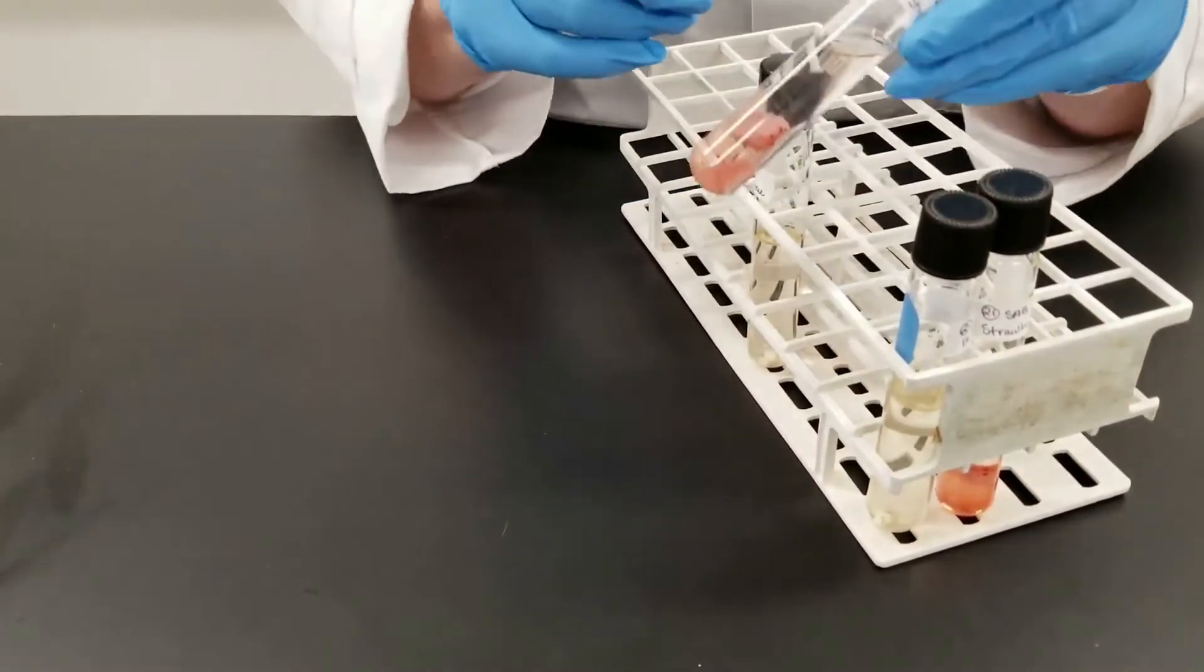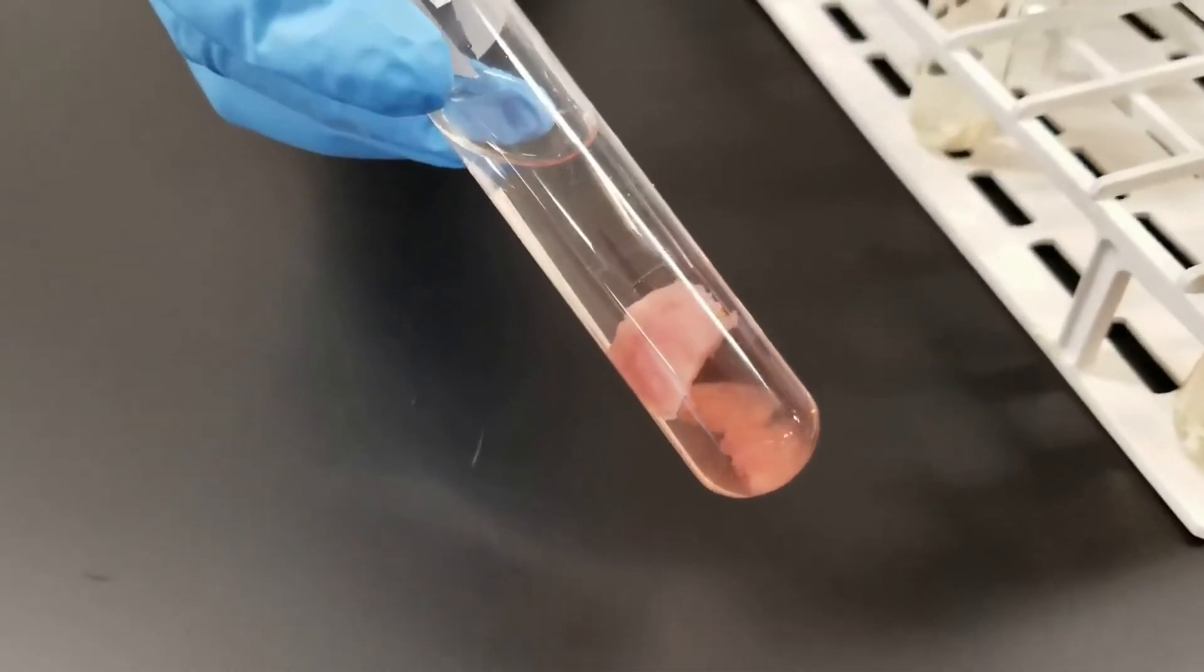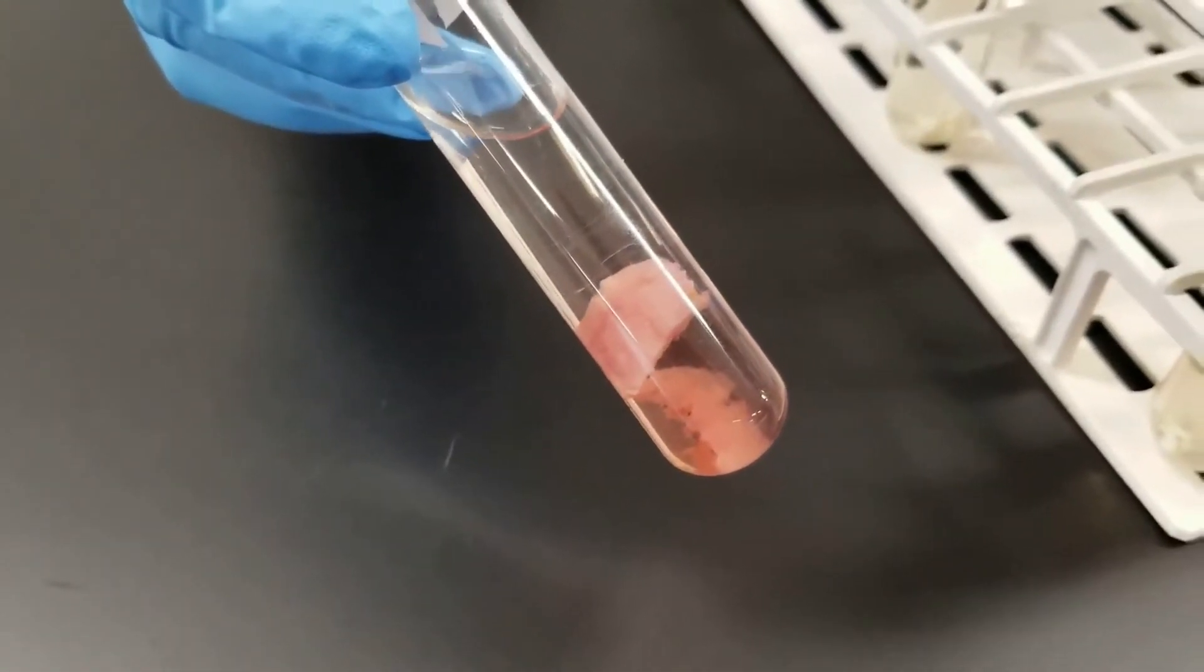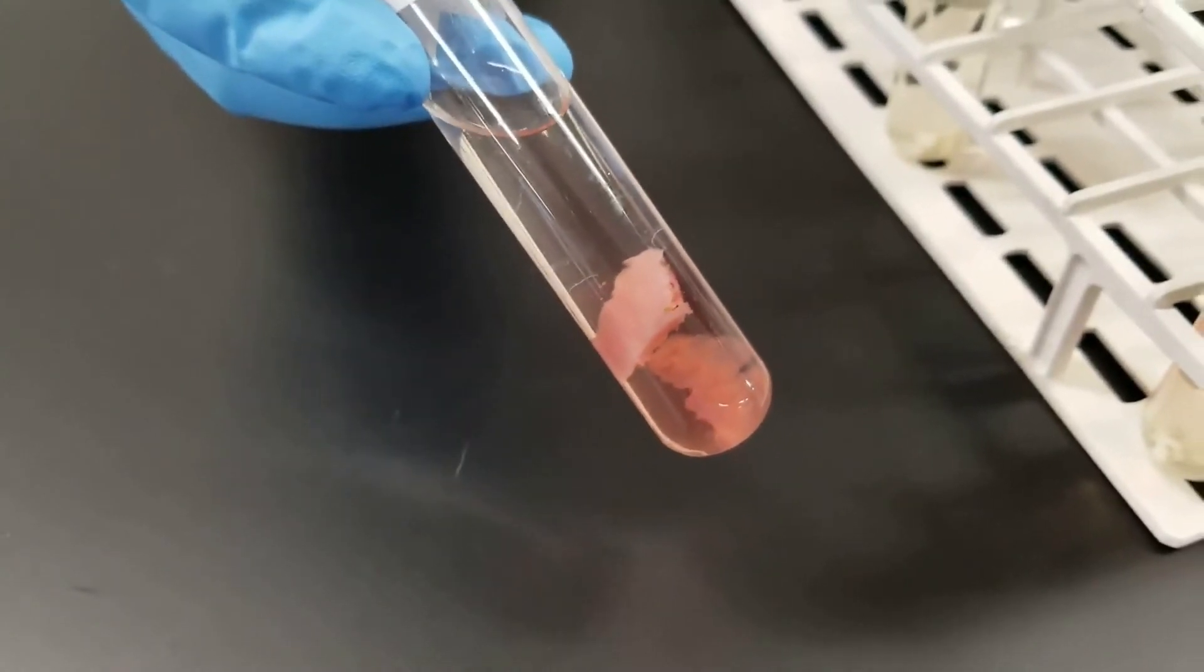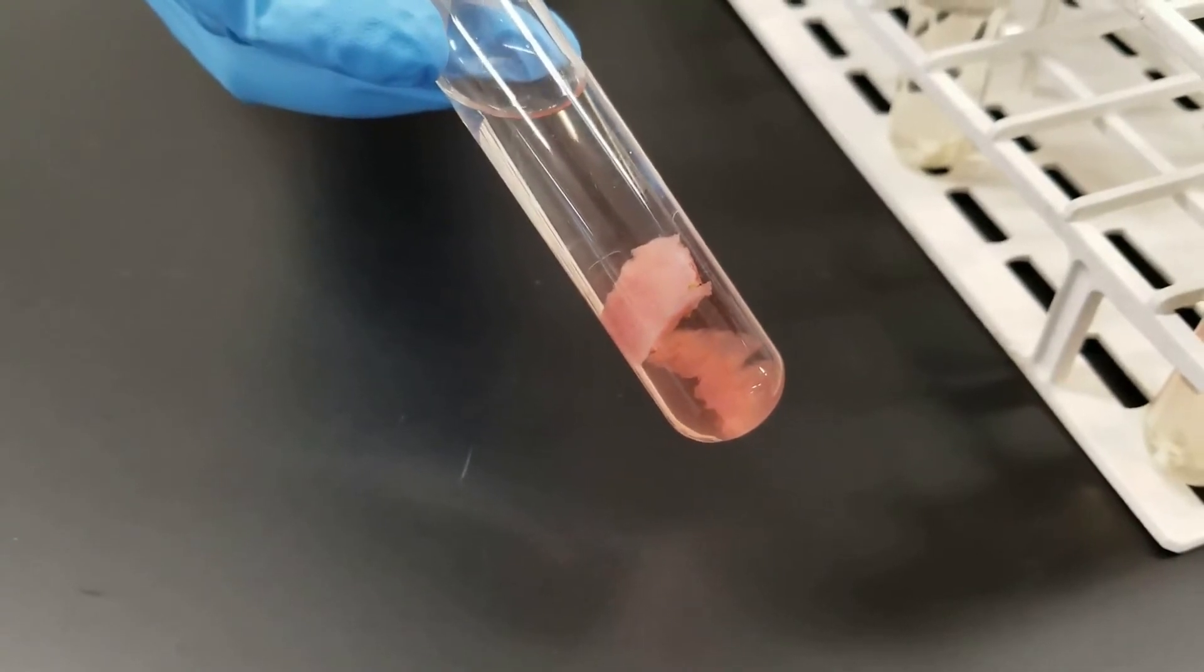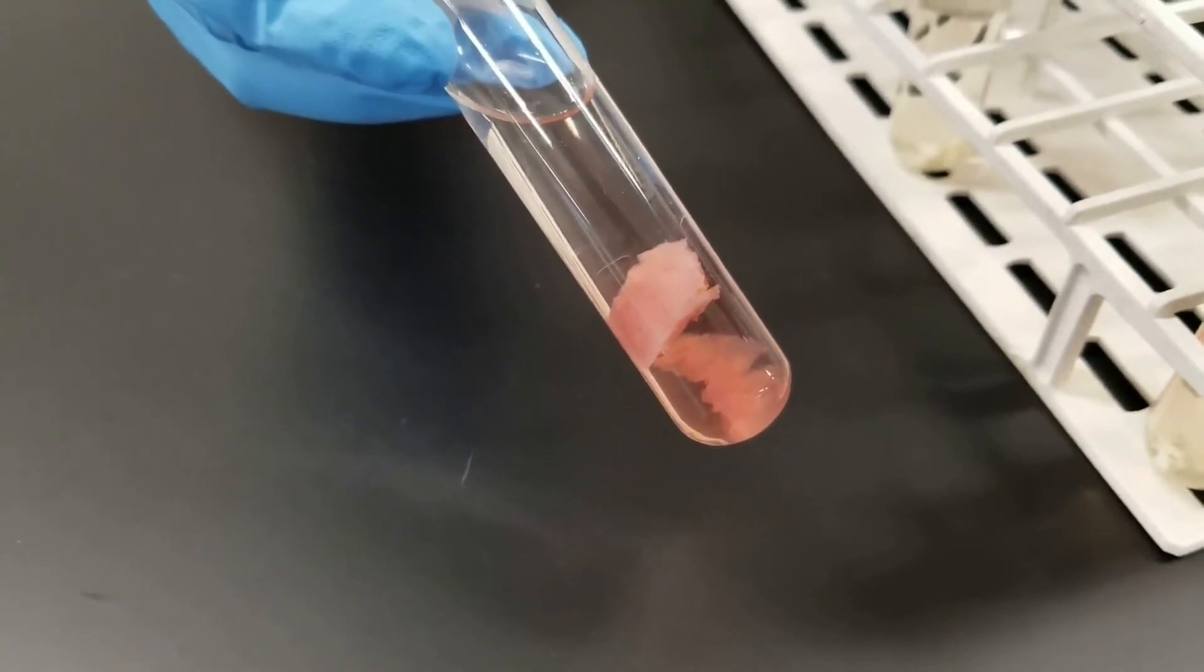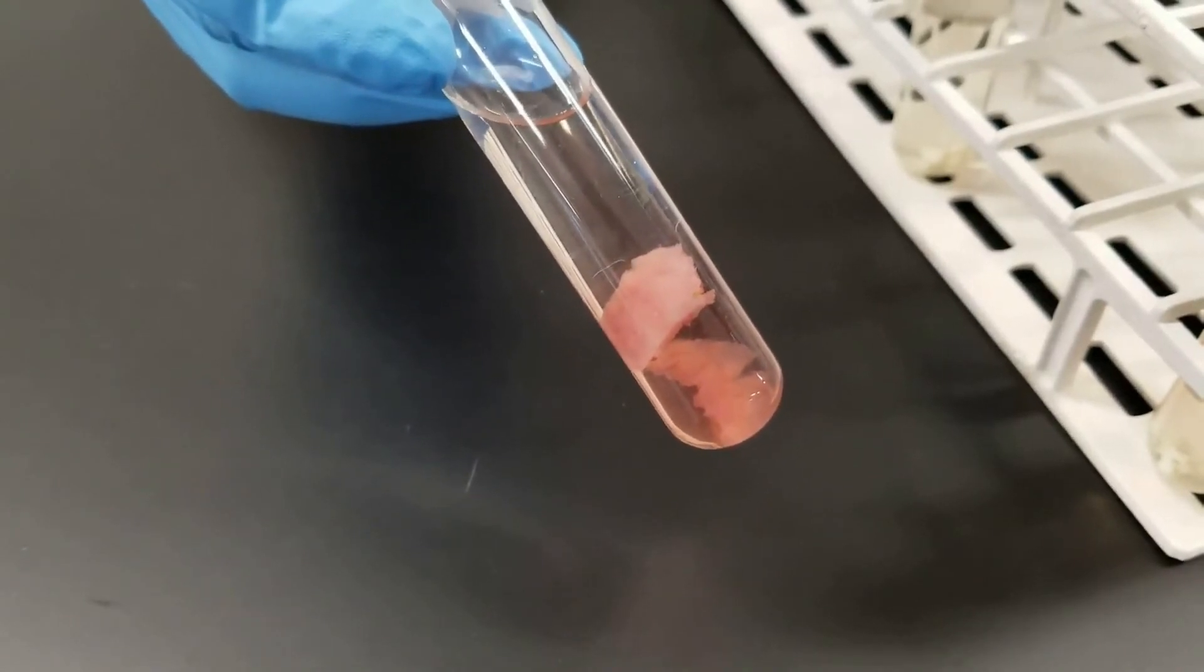This is the tube that we had strawberries in. This was incubated at 37. As you can see, the strawberries looked very good to the fungi. They are starting to grow in there. And one thing about this, notice that the media itself is clear. If it was bacteria growing, that liquid would be turbid or cloudy.